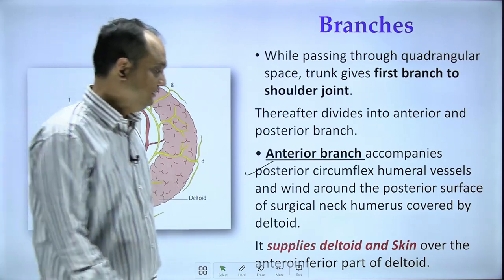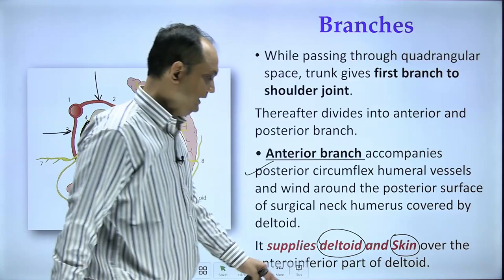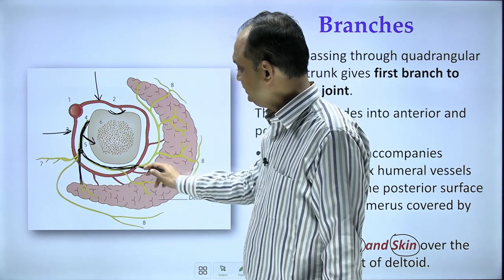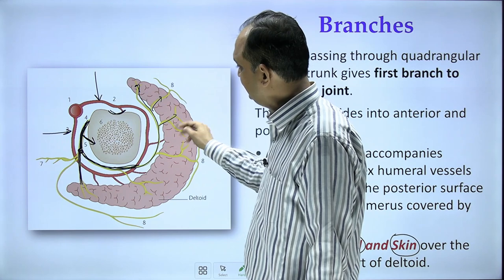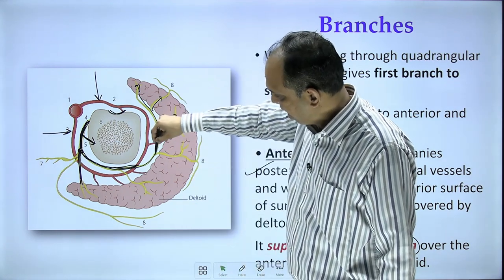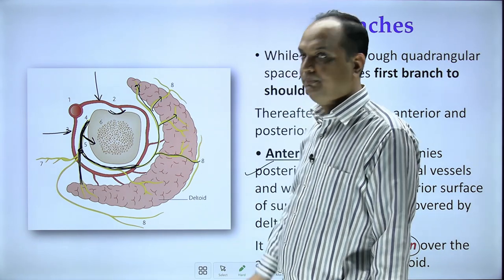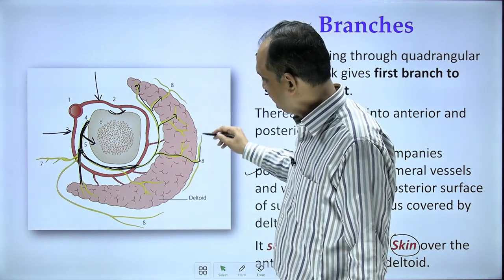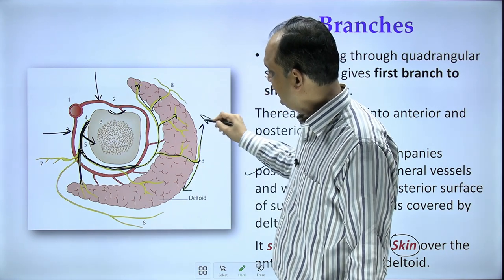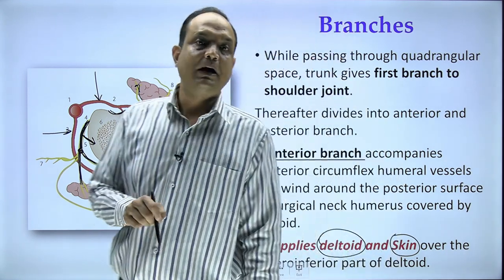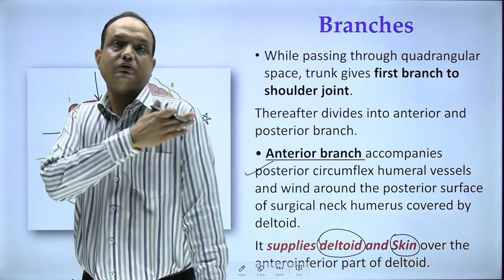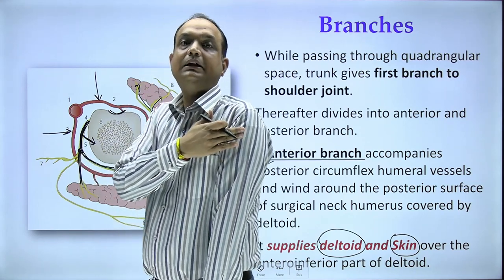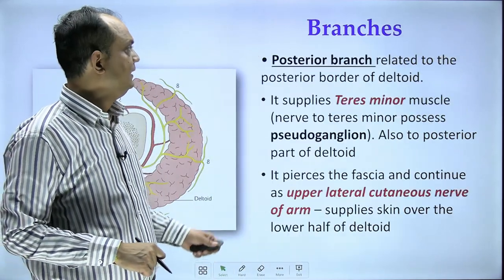The anterior branch of the axillary nerve is accompanied by the posterior circumflex humeral vessels. It supplies the deltoid as well as the skin over the anteroinferior part of the deltoid. A cutaneous branch from the anterior division pierces the full thickness of the deltoid and the overlying fascia, emerging on the surface to supply the skin of the anteroinferior area of the shoulder.